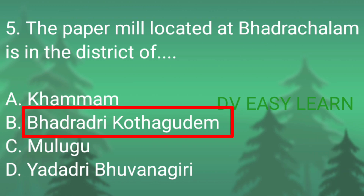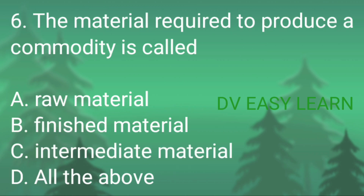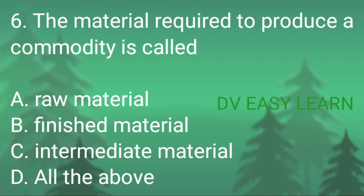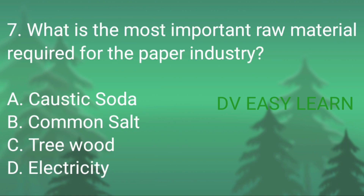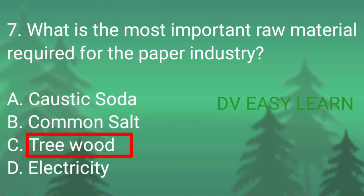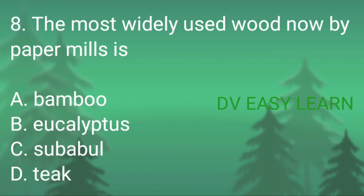Correct answer: Bhadradri Kottagudem. Question number 6: the material required to produce a commodity is called — correct answer: raw material. Question number 7: what is the most important raw material required for the paper industry — correct answer: tree wood. Question number 8: the most widely used wood now by paper mills is —